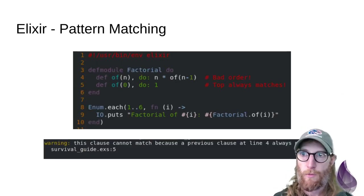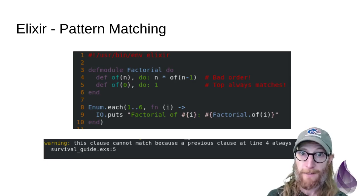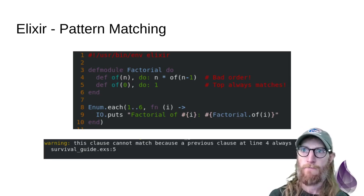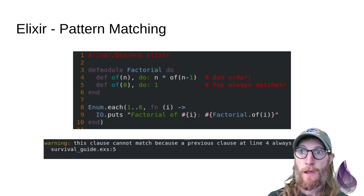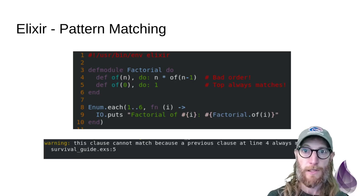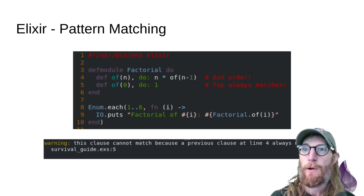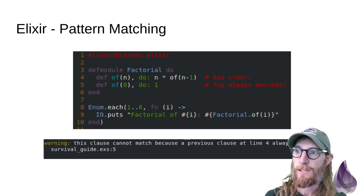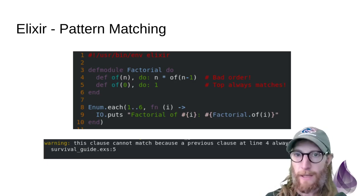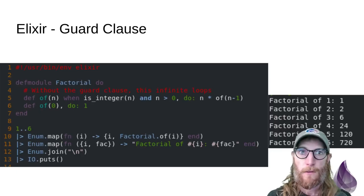To help illustrate how this pattern matching works with our factorial module, let's intentionally inject a bug and see how it impacts our code. We flip the order — lines four and five are now swapped, so the function that takes variable n is on top. Since n, a variable, will always match anything, it will always match first. Fortunately — and this is a really nice thing about the Elixir compiler — it will actually warn us and tell us that the first function is always going to match, so you've probably got a bug. It's also a very easy-to-understand error message.